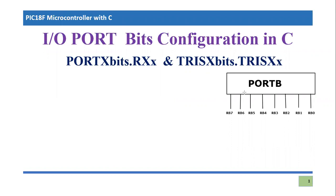In this video tutorial, we are going to learn about this specific procedure. In this figure, I have shown you Port B and we can observe the eight different pins, numbered from RB0 to RB7. For example, I am interested in the RB2 pin, and we want to configure this specific bit of Port B as an output port.